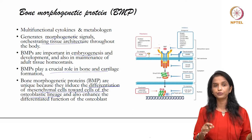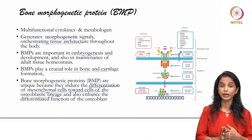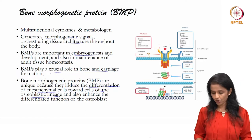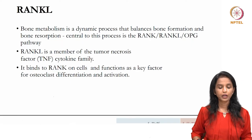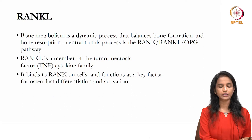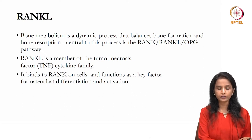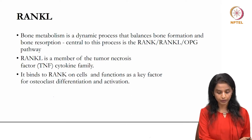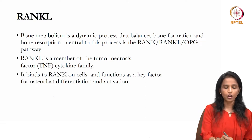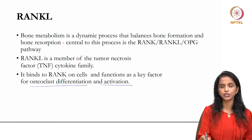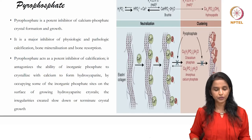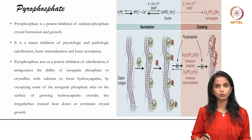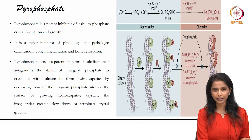For example, if there is an undifferentiated progenitor cell, BMP would trigger it to become an osteoblast. We then move on to RANKL, which is a very important member of the tumor necrosis factor family and is a key factor in osteoclast differentiation and activation.